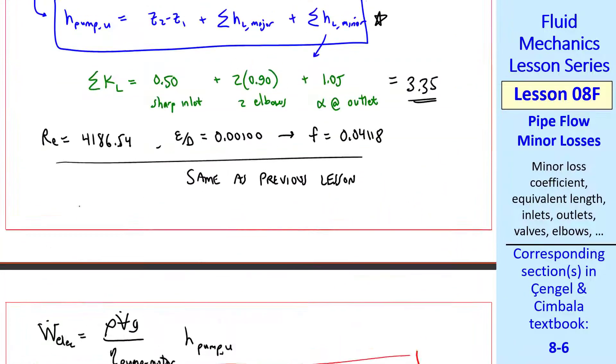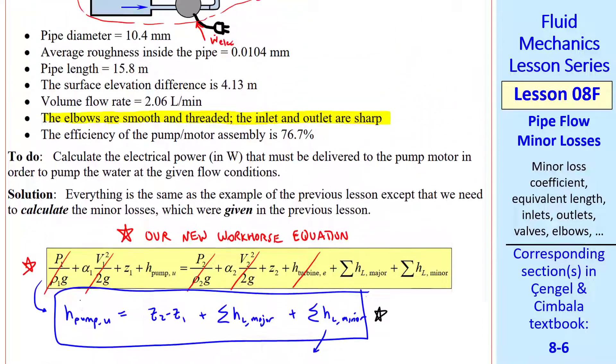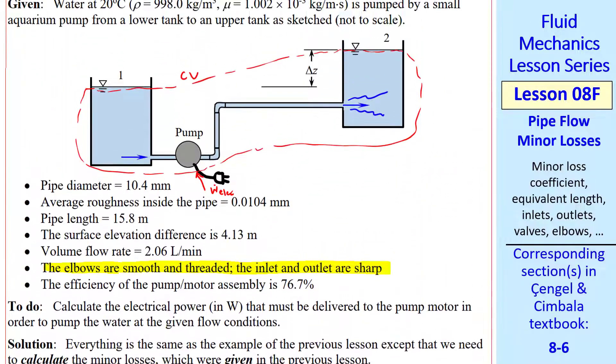Now we have all the tools that we need to solve complex pipe flow problems like this, including both major and minor losses, elevation changes, and pumps. We can do very similar problems with turbines.